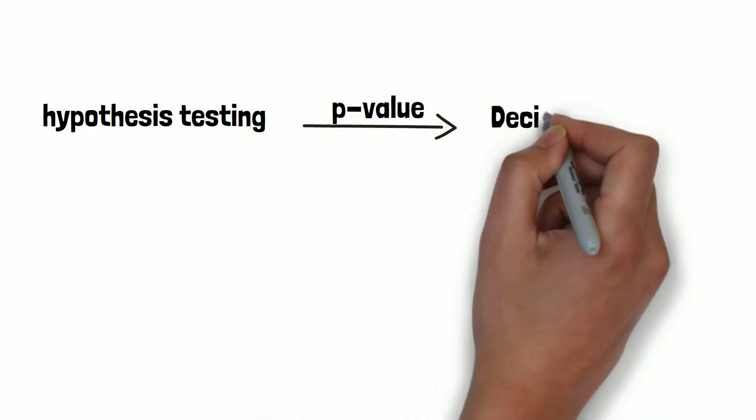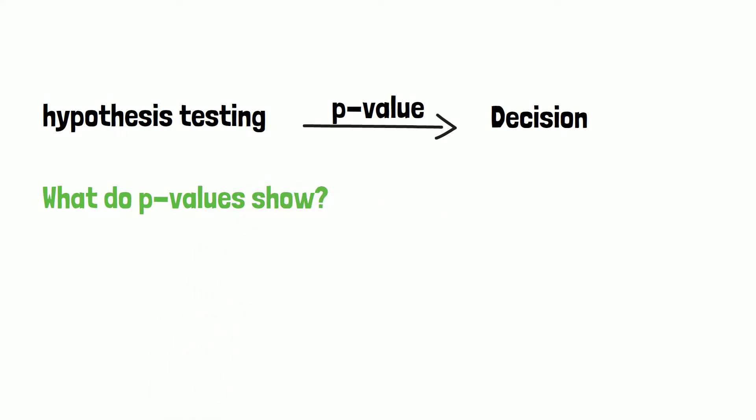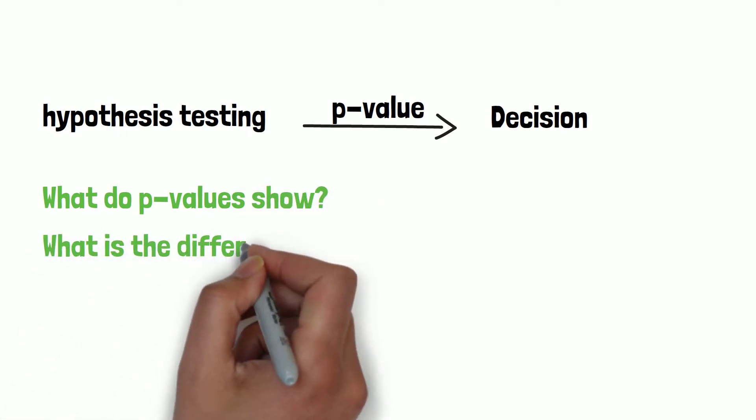Decisions in clinical trials are often based on p-values obtained from hypothesis testing. In today's video we want to explain what p-values show exactly and what is the difference to the error of the first kind.